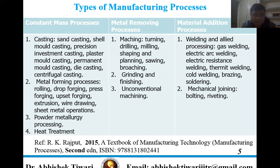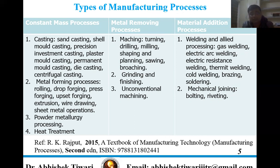In metal forming processes there are different types like rolling, drop forging, press forging, upset forging, extrusion, wire drawing, and sheet metal operations. In metal removing processes, as the term defines, we are going to remove metal. For example, if we machine any component we lose some part of material. Processes include turning, drilling, milling, shaping, planning, sawing, and broaching — in all these we lose some metal.